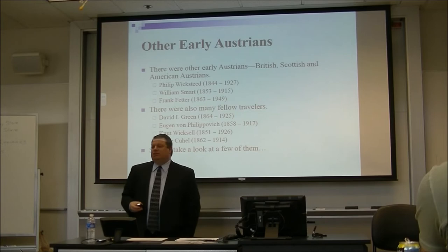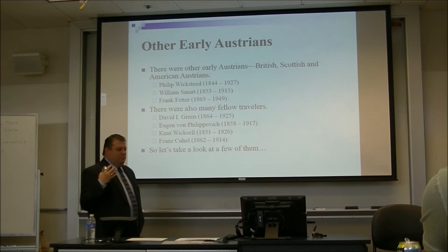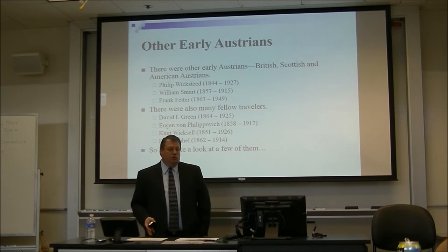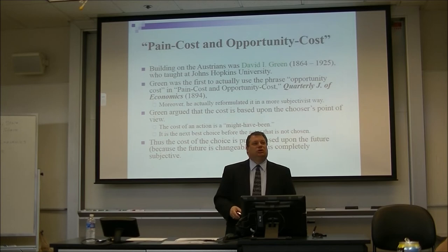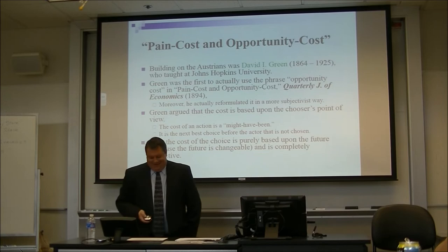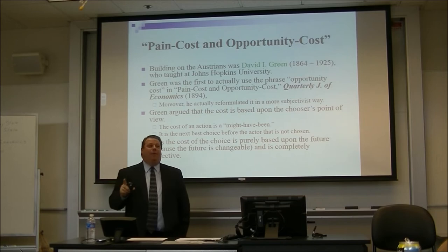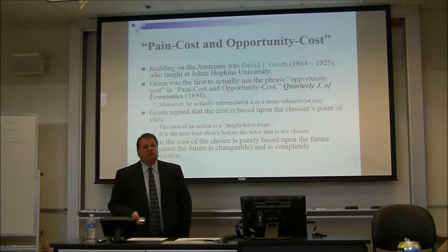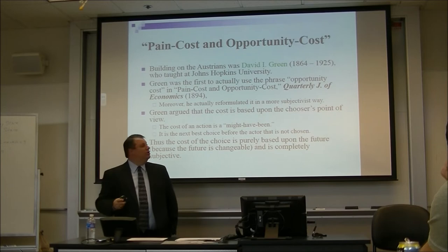Now there are a whole bunch of other early Austrians that most people are unaware of — British, Scottish, and American. We have Philip Wicksteed, William Smart, Frank Fetter, and fellow travelers like David Green and Newton McSell. David Green was over at Johns Hopkins. Green was the first to actually use the phrase 'opportunity cost,' in 1894. He was reading Wieser and coined the term. He argued that the cost is based upon the chooser's point of view — the cost of an action is a 'might have been,' the next best choice not taken. Thus the cost of a choice is purely based on the future and is completely subjective.